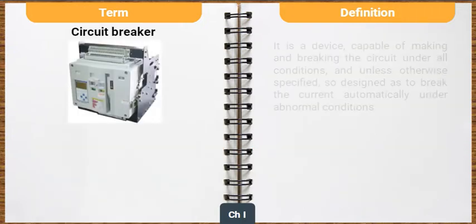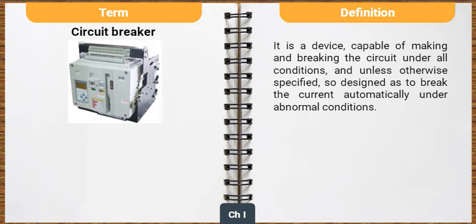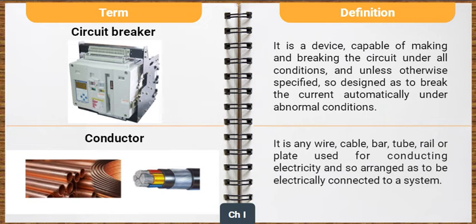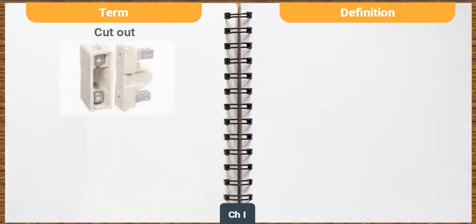Circuit Breaker is a device capable of making and breaking the circuit under all conditions, and unless otherwise specified, so designed as to break the current automatically under abnormal conditions. Conductor is any wire, cable, bar, tube, rail, or plate used for conducting electricity and so arranged as to be electrically connected to a system. Cutout means any appliance for automatically interrupting the transmission of electricity through the conductor when the current rises above a predetermined amount, and shall also include fusible cutout.